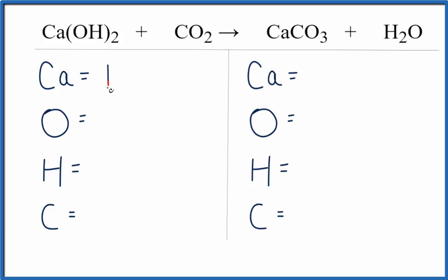So for calcium, I have one calcium atom. And then this oxygen here, this two goes to everything in the parentheses. So I have one oxygen times the two. That'll give me two oxygen atoms. And I have these two here. Don't forget about those. So that'll give me a total of four oxygen atoms.